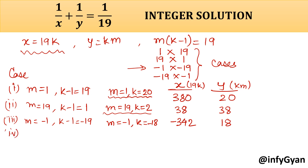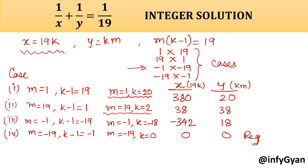Fourth, the last case: m is equal to negative 19 and k minus 1 is equal to negative 1, so m equals negative 19 and k equals 0. Then 19k equals 0 and km equals 0. This case you will reject because both x and y values are 0.